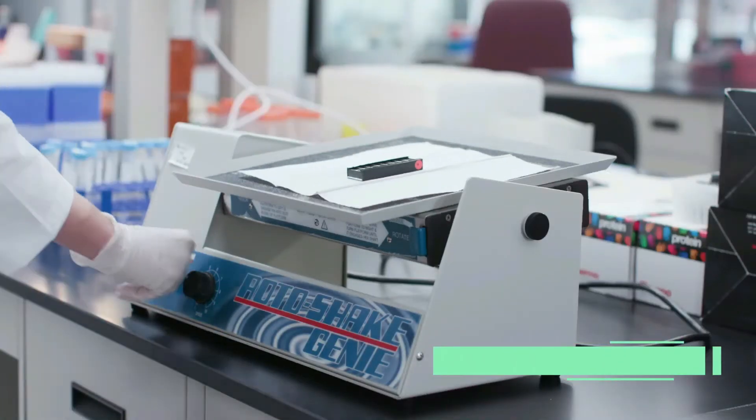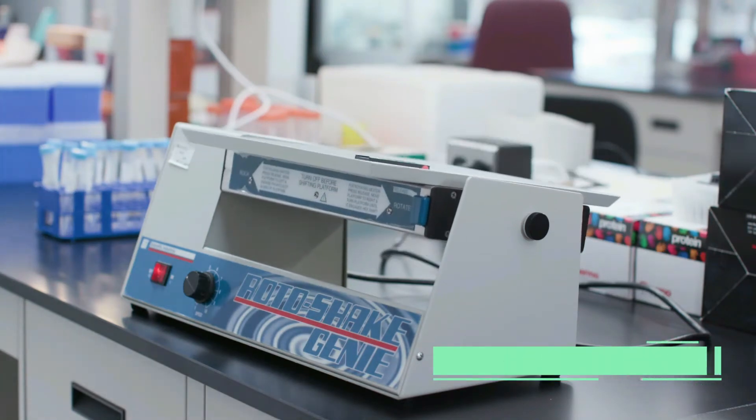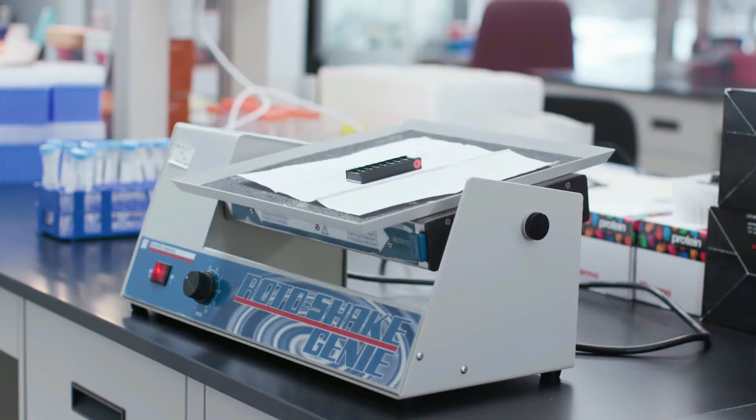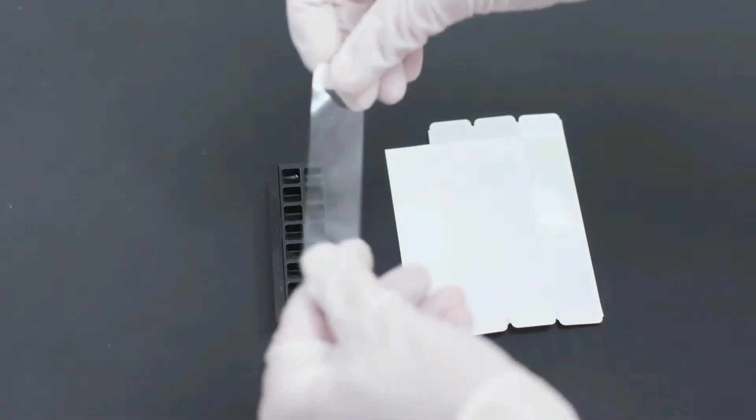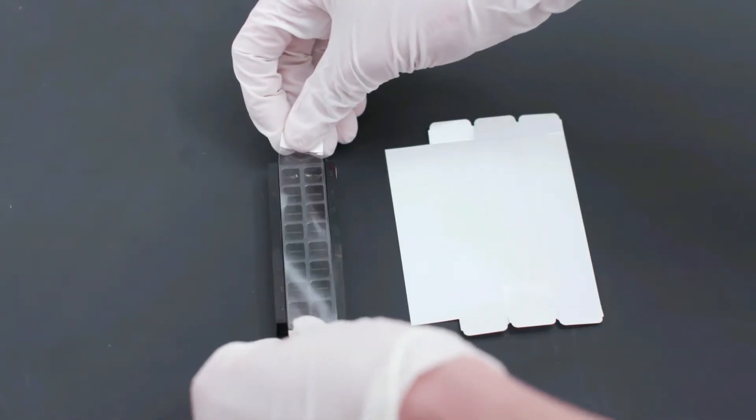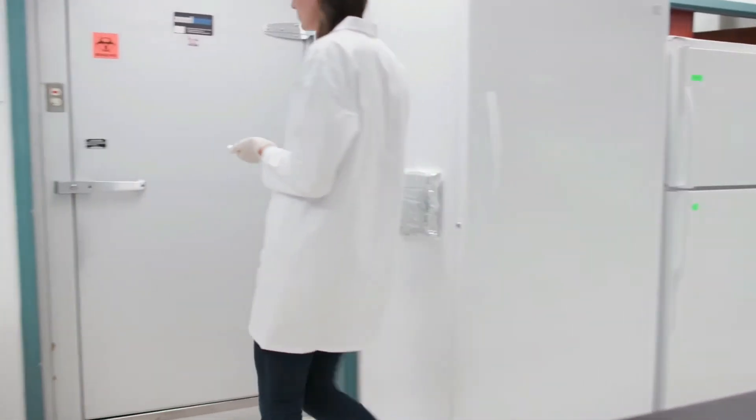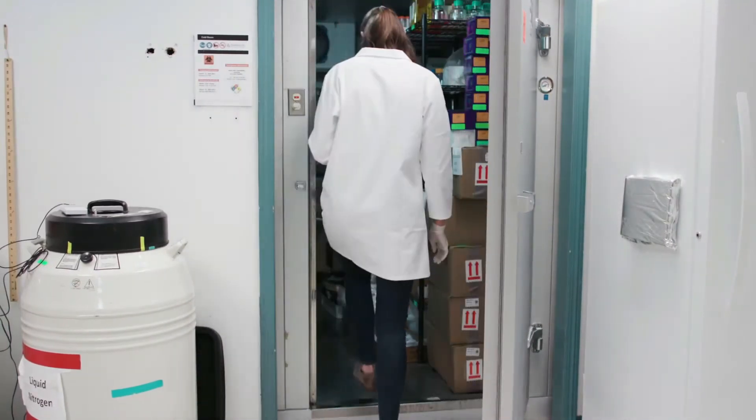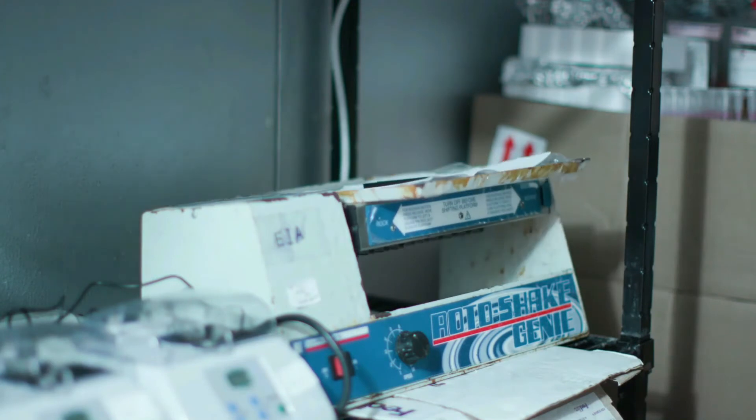All incubation steps, including washes, should be performed with gentle rocking or rotation. We recommend a half cycle per second. Avoid vigorous shaking of the slide, which can cause splashing. We recommend incubation at room temperature. However, the sample incubation step may be performed overnight. Overnight incubation should be done at 4 degrees Celsius, with sealed wells to avoid evaporation. The following day allow the slide to warm up to room temperature for one hour before proceeding with the next step.